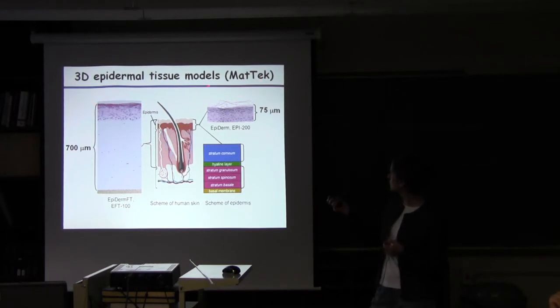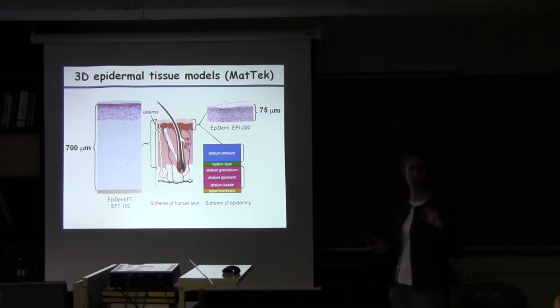And then there's also what I'll be talking about today, this EPI-200, which is really just the epidermal layer. So this doesn't contain any fibroblasts, but it does contain the differentiating cells as they go up from the basal layer that sits right next to the support membrane, and then the cells differentiate up until they finally become completely cornified.